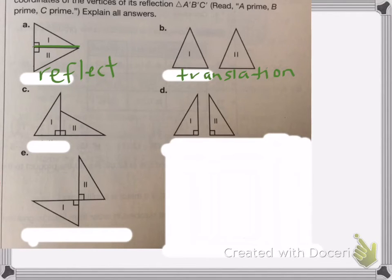On C, they're already in the right spot. I just need to move this triangle and rotate it on top of the other. So this one's going to be rotation.